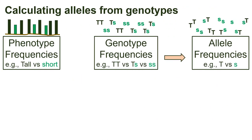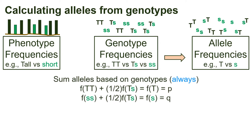Now for calculating allele frequencies from genotype frequencies. We can sum the frequencies of the alleles based on the genotype frequencies. If we add the frequency of the TT homozygote to one-half of the frequency of the heterozygote, we get the frequency of the T allele, P. If we add the frequency of the ss homozygote to one-half of the frequency of the heterozygote, we get the frequency of the s allele, Q. This method will always work, whether the population is at Hardy-Weinberg equilibrium or not.